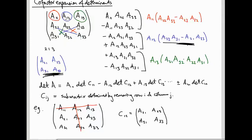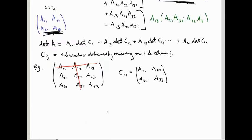Now, we kind of arbitrarily started by fixing our choice in the first row and expanding, but we could have fixed our choice in any of the rows and expanded around that row to get a similar formula. So in general, det A equals plus or minus Ai1·det(Ci1) minus or plus Ai2·det(Ci2), etc. — I'll say more about the signs in a moment.